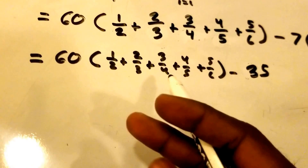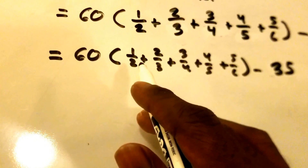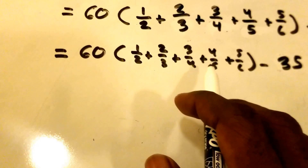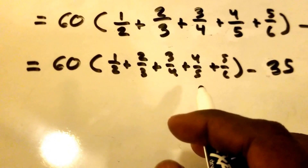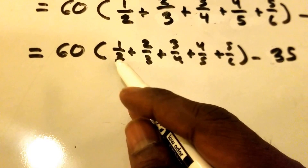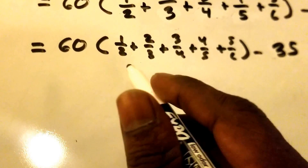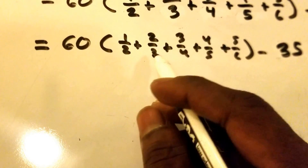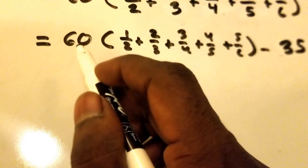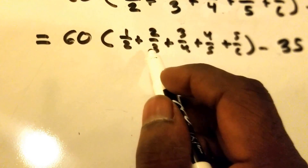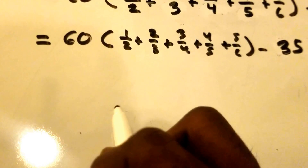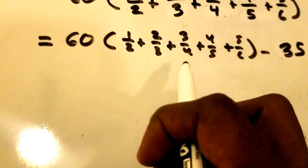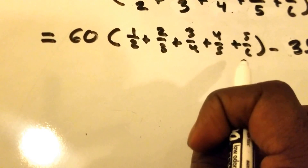Now this looks pretty solvable — just multiplication, subtraction, and addition. Let's add up 1 half plus 2 thirds plus 3 fourths plus 4 fifths plus 5 sixths by finding a common denominator. I notice the 60 out front, so 60 can serve as a common denominator for all these fractions.